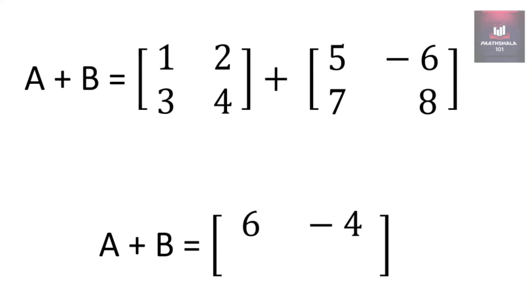Now for second row first column of A plus B, we will take second row first column of A plus B, that is 3 plus 7, which will add up to 10.